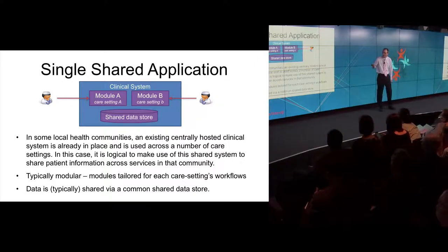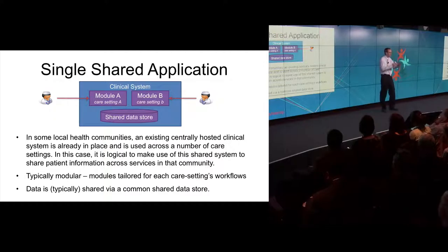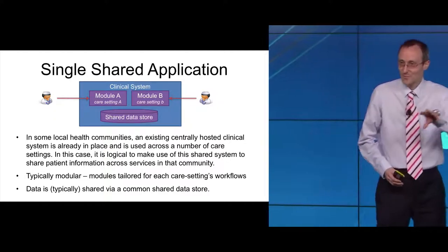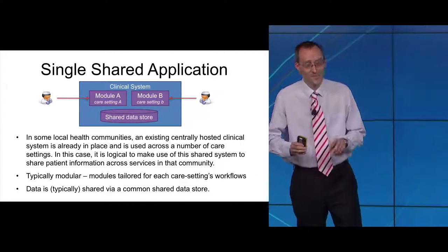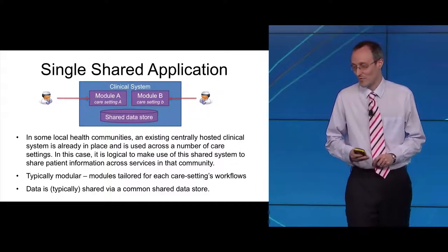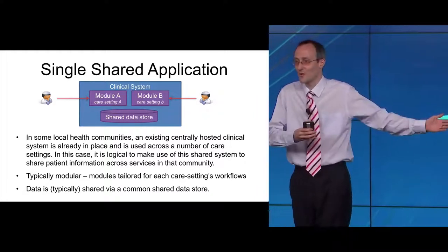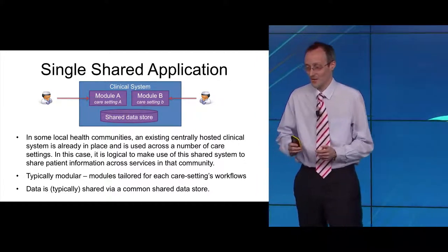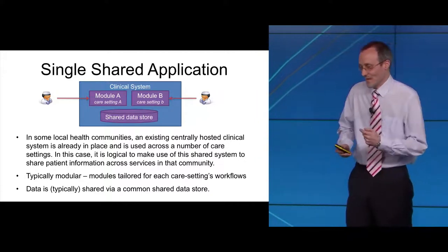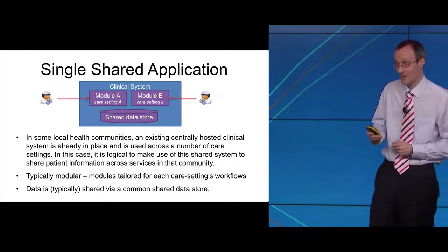One really simple approach, which you'll be familiar with, is just having the same system. You can share information quite effectively by all using the same system. Systems like Lorenzo, System One, or Emis allow the same system to be used by a number of different services and information to be shared within that system. That works very well because you don't have to worry about differing information models. But typically you'll reach a point where another service, say social care, just doesn't want to use that system, or you might not want to be tied into one supplier. So there's generally going to be a point at which you realize you can't scale that to solve all your sharing problems, although it shouldn't be ruled out as a way of solving some of them.